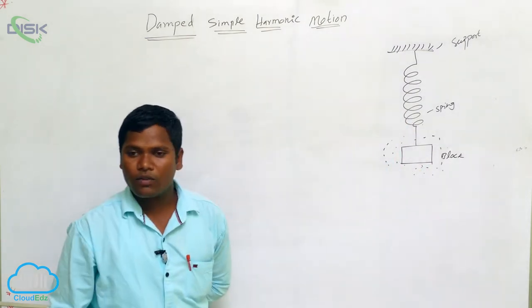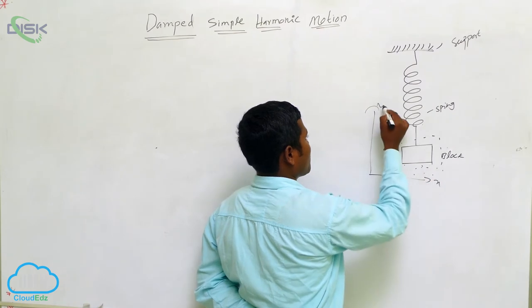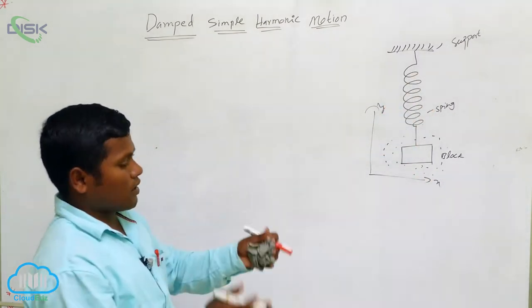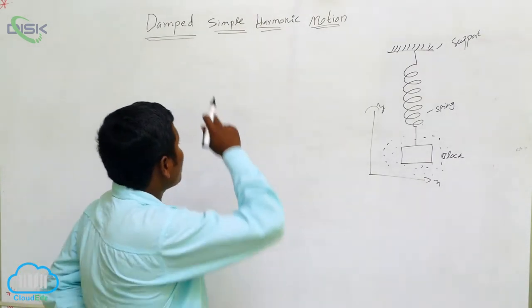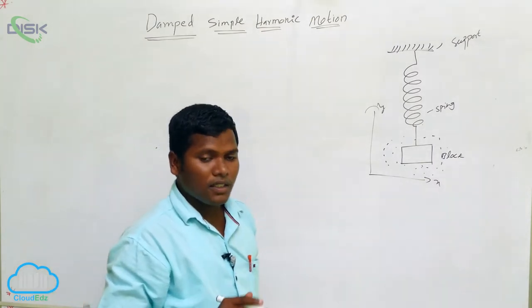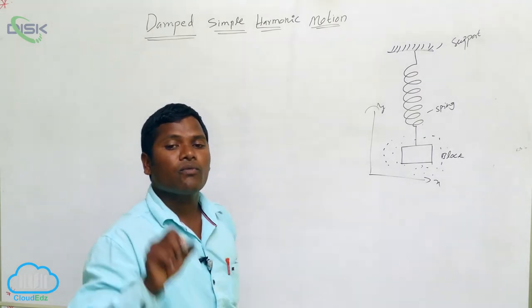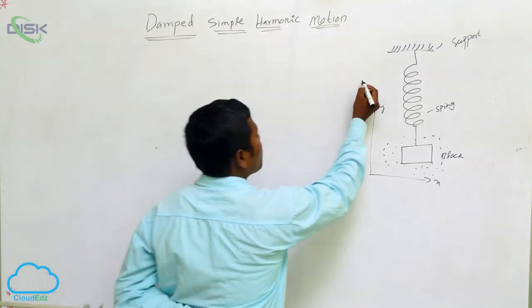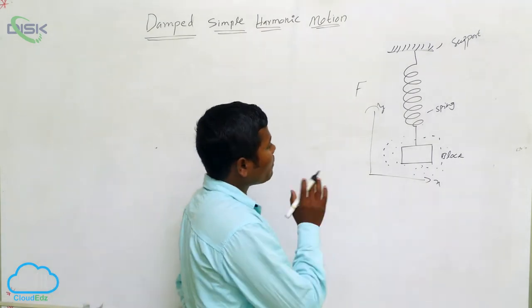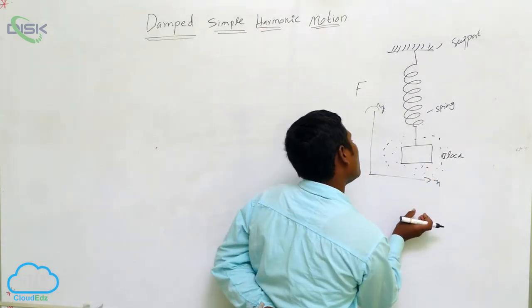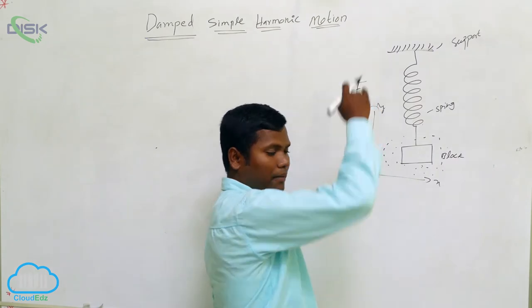Around the block there are particles — we consider the x-axis and y-axis. When the simple pendulum makes oscillations, in damped simple harmonic motion two types of force act: one is the restoring force and another is the frictional force.